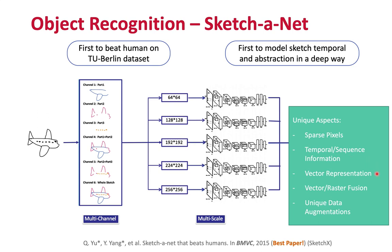Photos are raster images whereas sketches may be vector images. One of the first works that analyzed all of these different issues for the purpose of sketch recognition was our own SketchNet, published at BMVC 2015. What we aimed to do was to recognize sketches exploiting the fact that they were vector images and that we had temporal information. We decomposed the sketch into different segments using the vector source and temporal information, fed each into CNN branches, and classified the sketch that way. We were the first to beat human performance on the TU Berlin dataset, and since then many works have gone on to do much better.